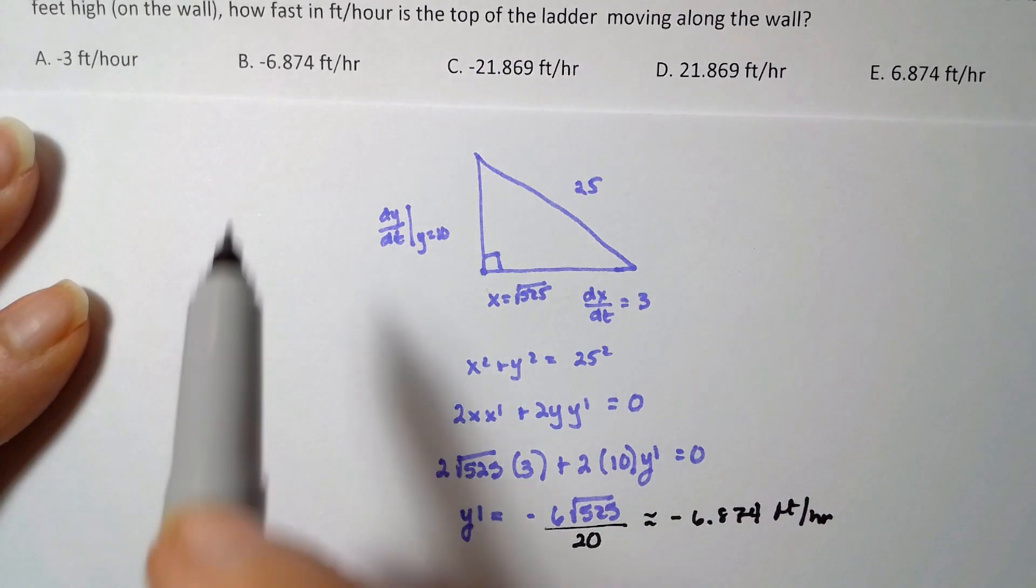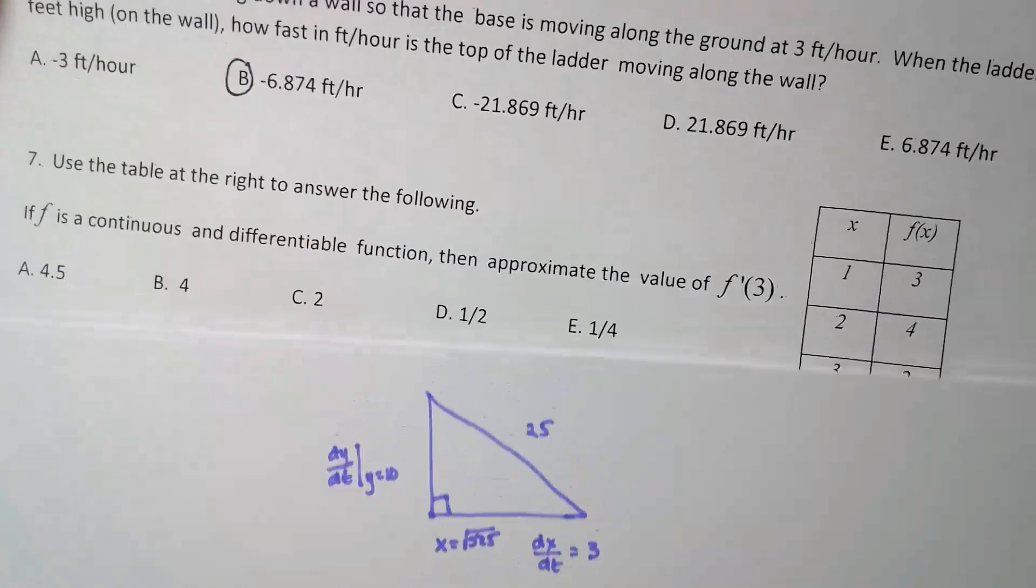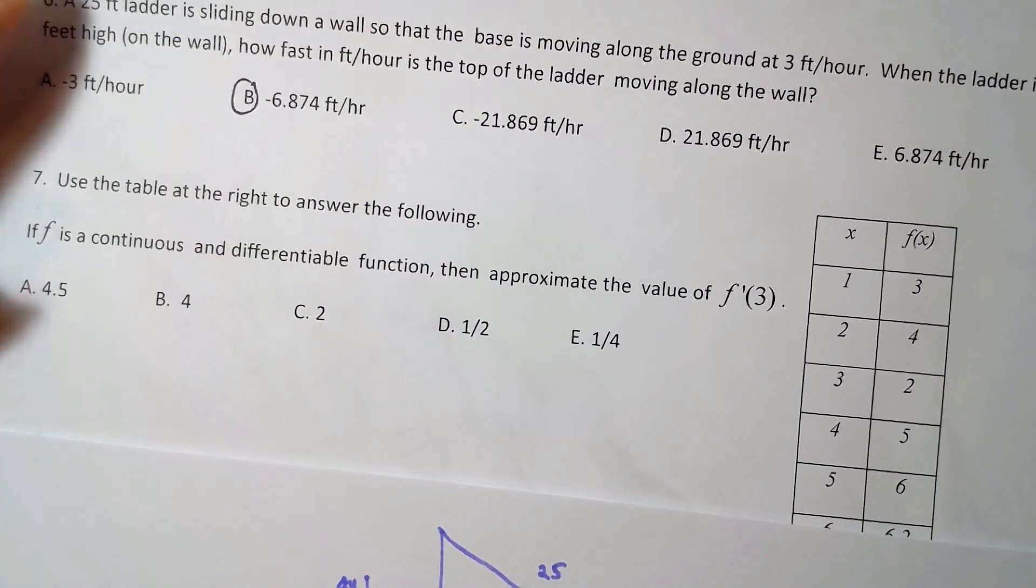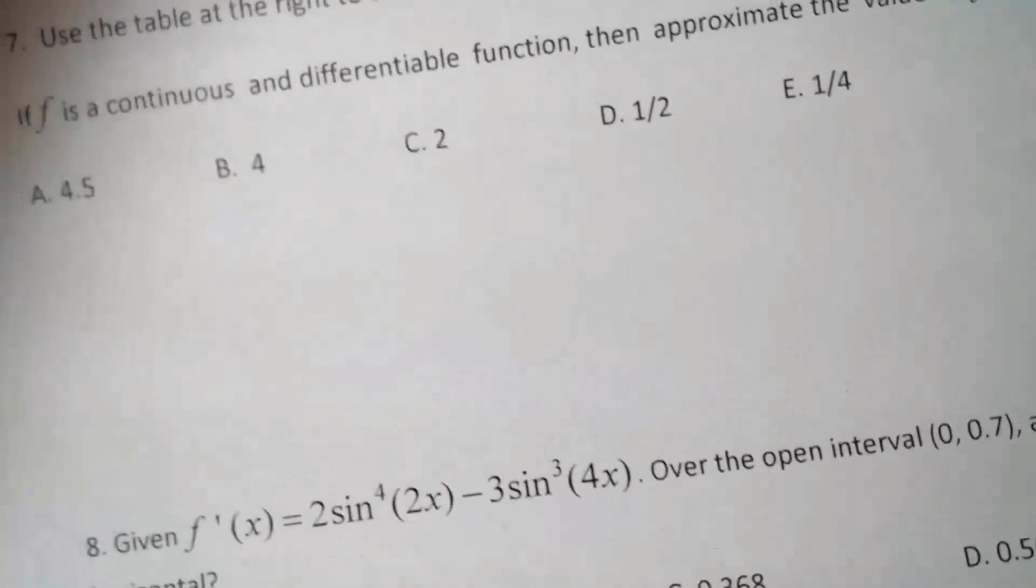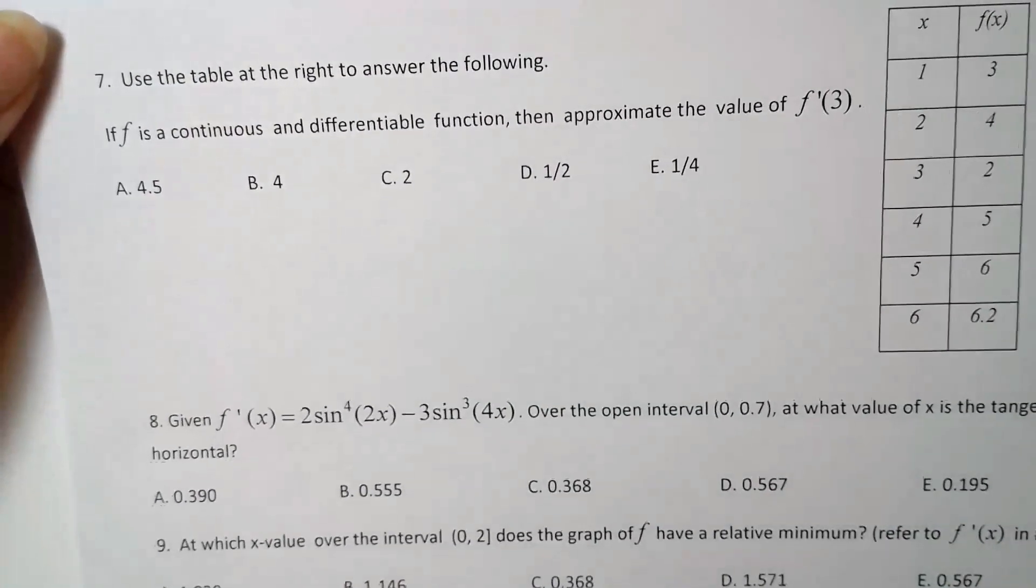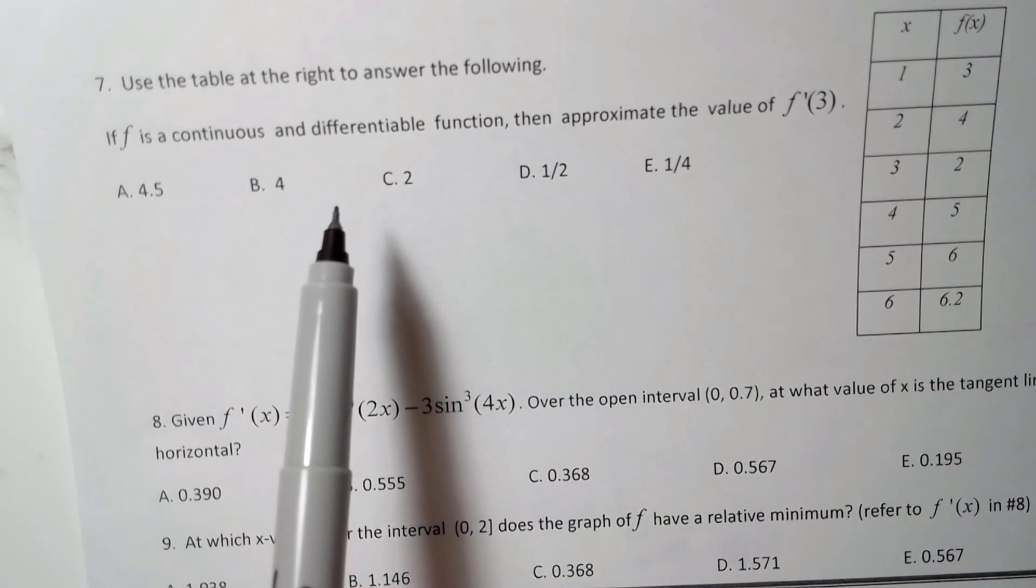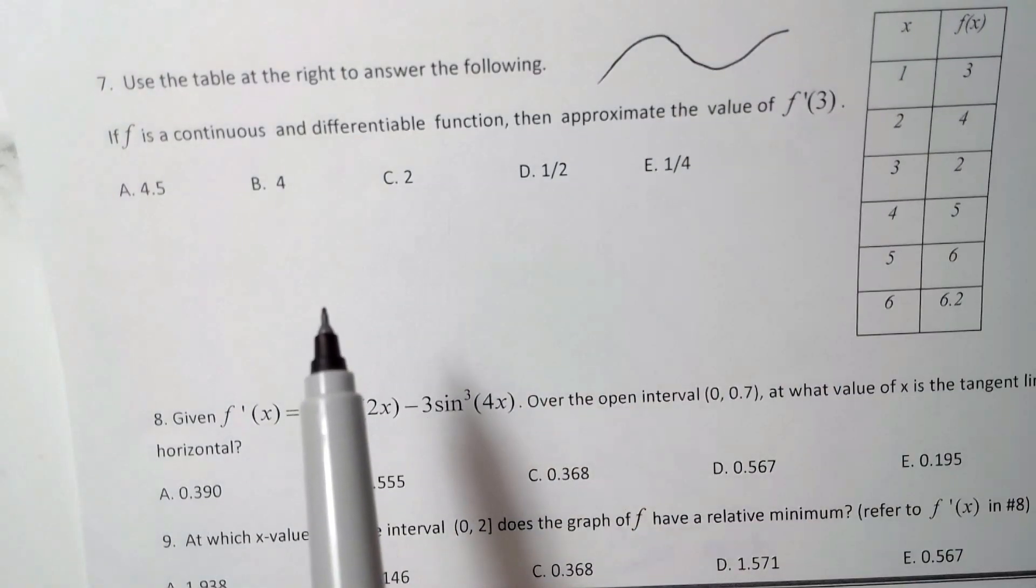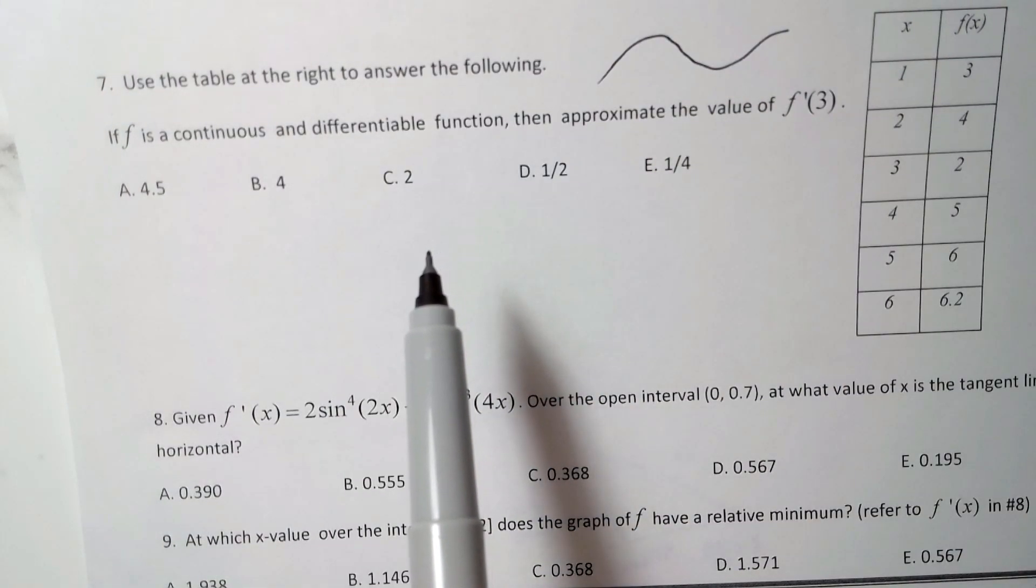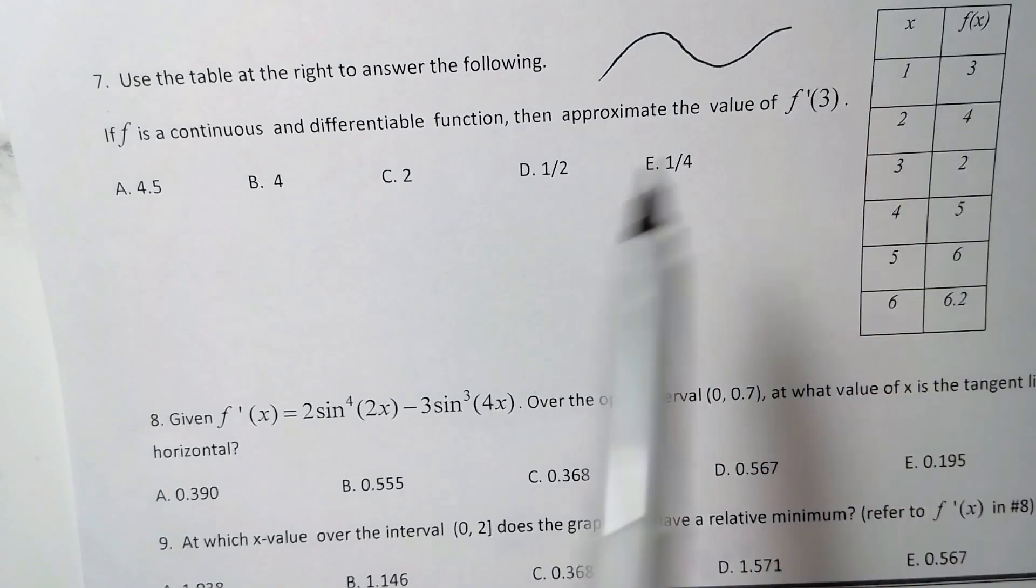All right, number seven. So let me just fix this here because this is a little bit weird the way I've got this thing set up. So we want to use the table to the right to answer the problems. If f is continuous and differentiable, meaning that it's a nice smooth curve without any points or cusps or corners or breaks or anything like that, there are no holes because it's differentiable.